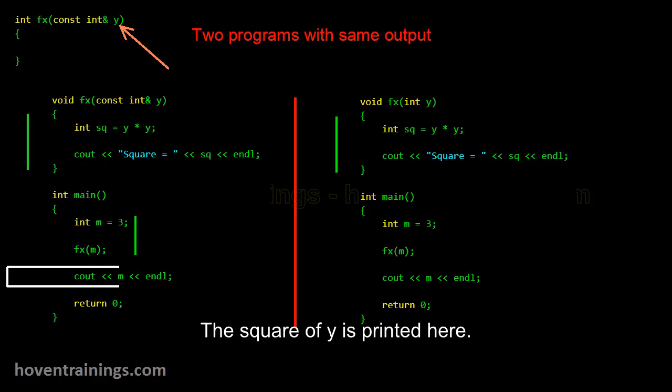The square of y is printed here. m is passed by value; it is copied into y.